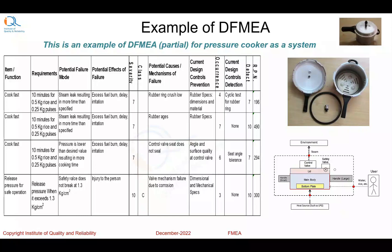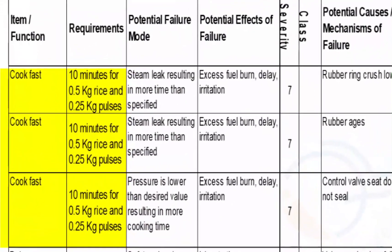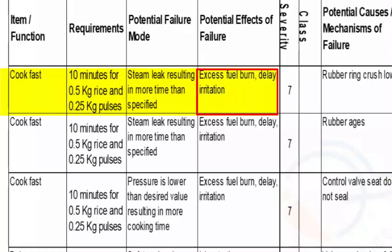There are 4 rows in this FMEA — this is not a complete FMEA. The requirement for cooking fast is 10 minutes for 0.5 kg rice and 0.25 kg pulses for the first 3 rows. The potential failure mode for the first row is steam leakage resulting in more time than specified. The effect is excess fuel burning, delay in cooking, and irritation. The severity is rated 7 because it degrades the main function of the pressure cooker.